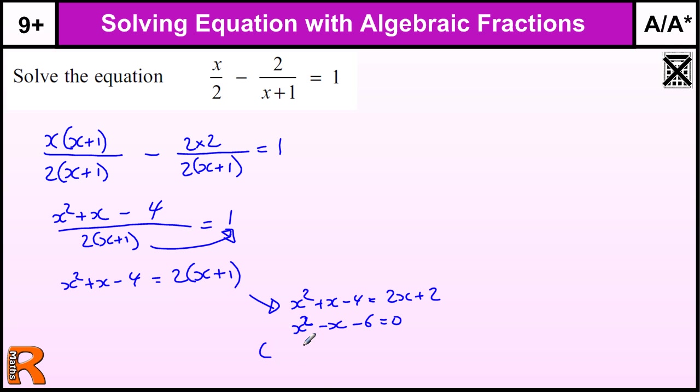Now I need to solve that by factorizing. What multiplies to make 6? Could be 1×6 or 2×3. To get -x when combined, one is positive, one is negative. The bigger is negative, and they're 1 apart, so +2 and -3. This gives (x+2)(x-3). When multiplied out: 2x - 3x = -x, and (+2)×(-3) = -6.